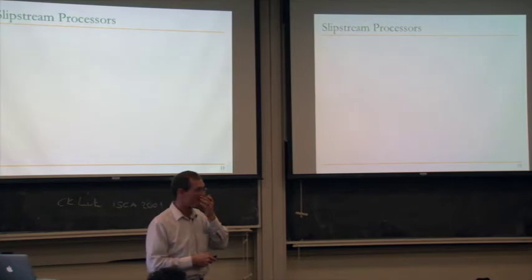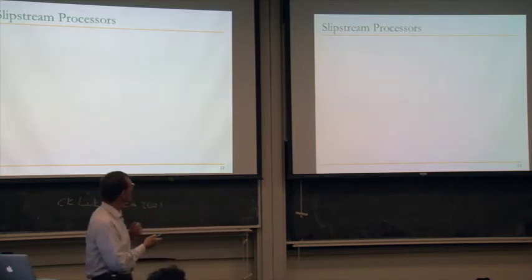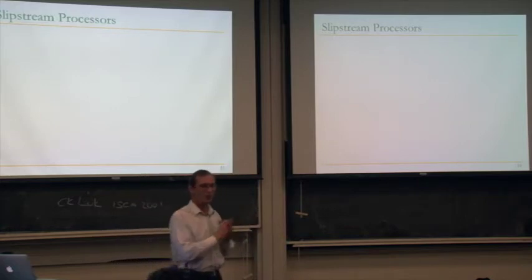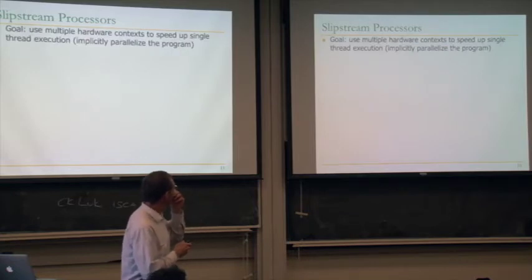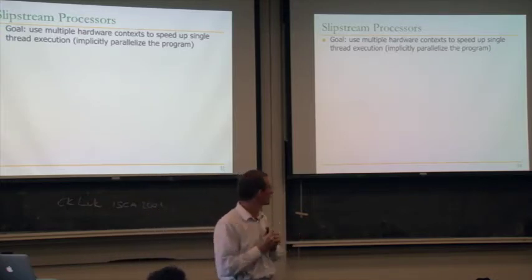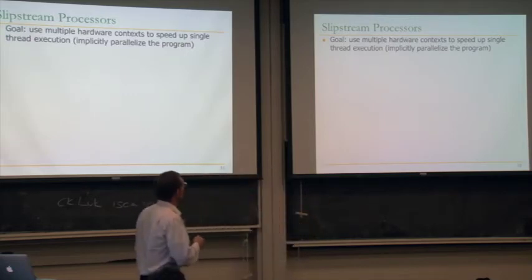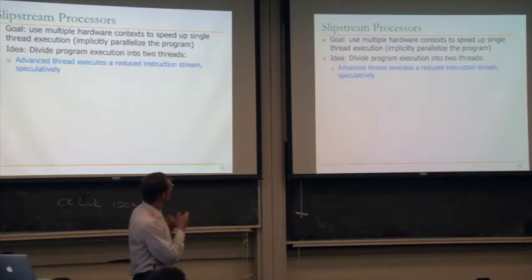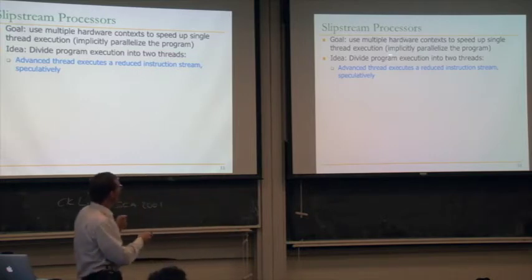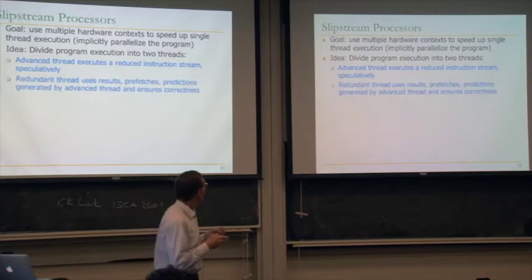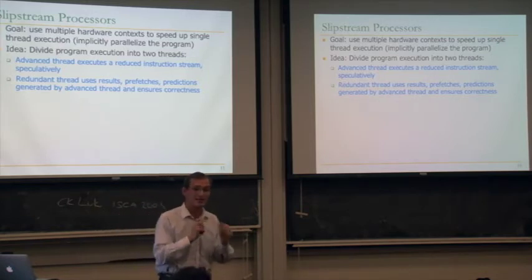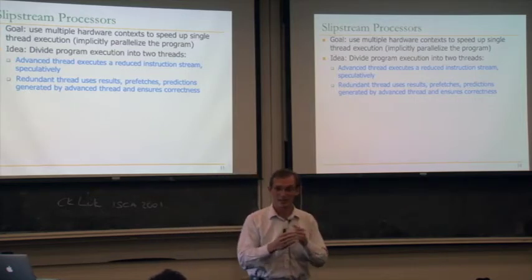A related work is slipstream processors. The goal is again to use multiple thread contexts to speed up single-thread execution, similar to multi-scalar but much later, with a very different approach. You divide the program into two threads: one advanced thread and a redundant thread. The advanced thread executes a reduced instruction stream — not the full program — and does it speculatively. The redundant thread uses results from this reduced instruction stream and prefetches generated by the advanced thread.